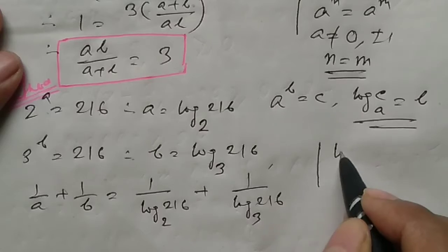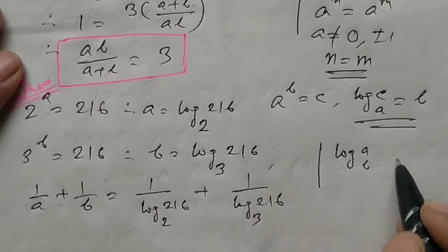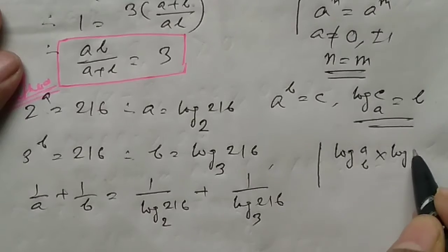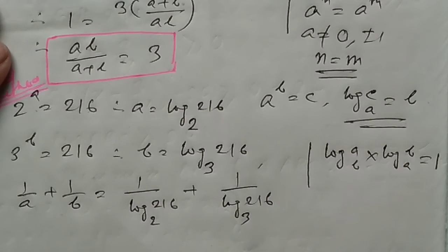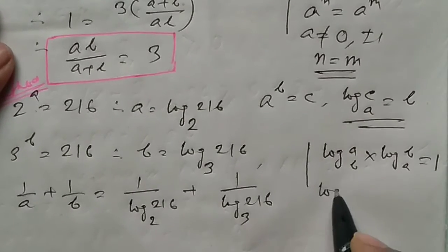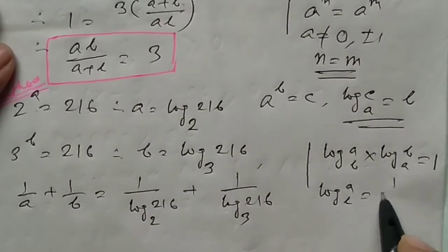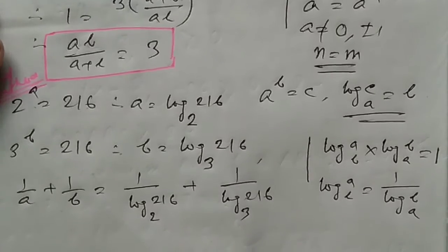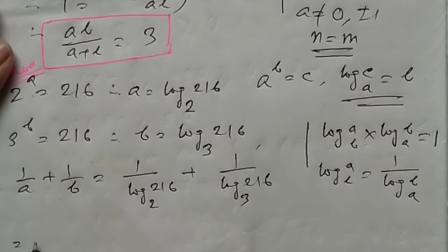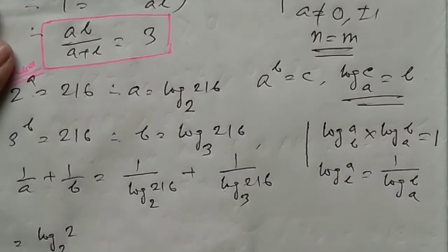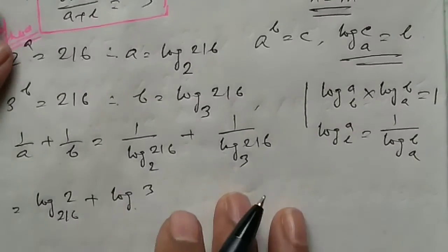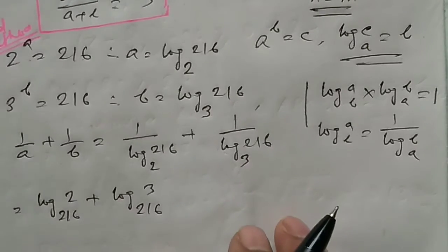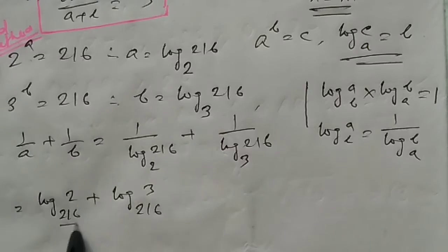Using the log property: log A to the base B times log B to the base A equals 1, which means log A to the base B equals 1 by log B to the base A. So 1 by log 216 to the base 2 equals log 2 to the base 216, and similarly for base 3.